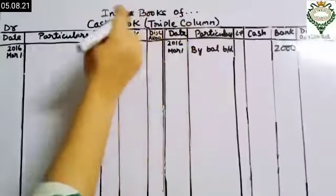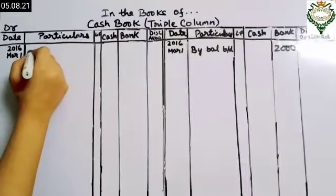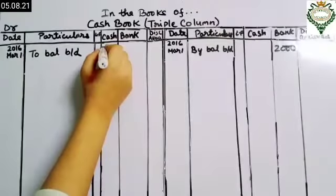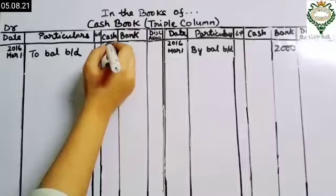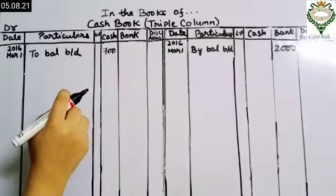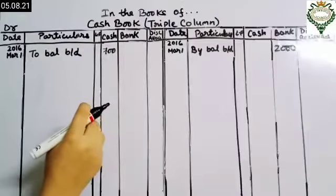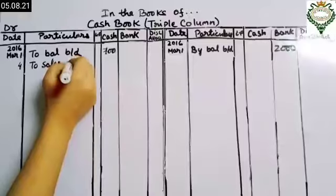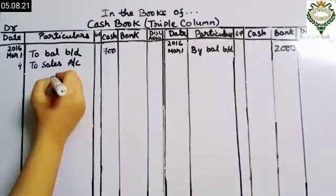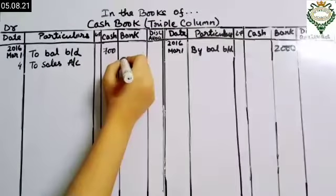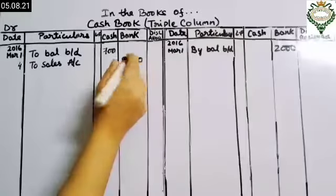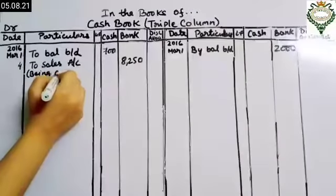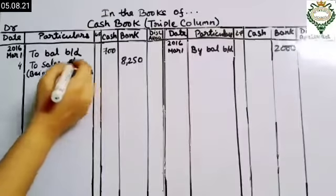Then it says cash in hand, so we write 'To Balance b/d' with ₹700 in the cash column. The next transaction on 4th March: received from sales and paid into bank. We record on the debit side as 'To Sales Account' with ₹8250 in the bank column, with narration 'being cash sales paid into bank'.